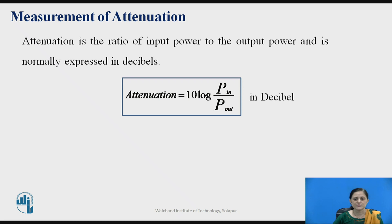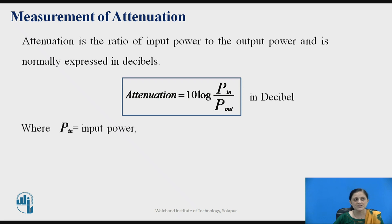Now let us consider the first point: measurement of attenuation. Attenuation is the ratio of input power to output power, and it is normally expressed in decibels. Since it is a ratio of powers, we calculate the decibel value by multiplying with 10 log of the power ratio — that is P_in divided by P_out — where P_in is the input power and P_out is the output power.